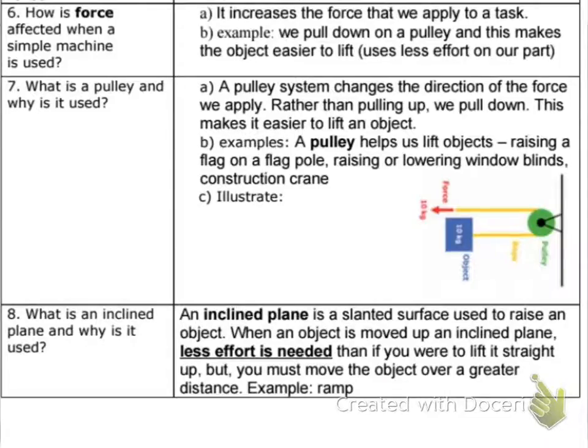Number seven, what's a pulley and how is it used? The main thing, and this was in the Just the Facts, it changes the direction of the force we apply, or the applied force. Rather than pulling up, we pull down. So it makes it easier. So an example would be a pulley that helps us lift things like lifting a flag up on a flagpole, lowering the blinds, and then here's a picture here. You should have it in your Just the Facts as well.